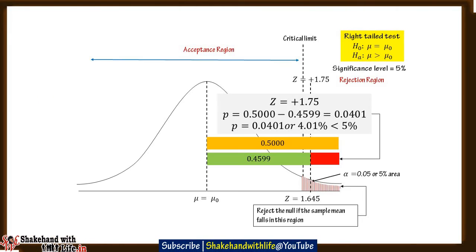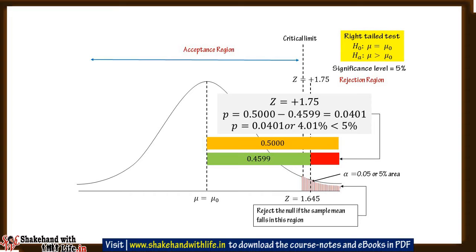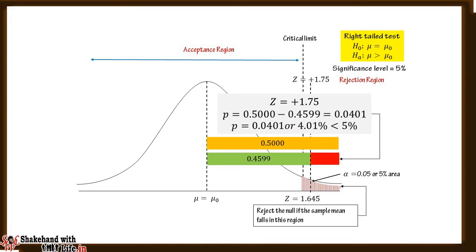In case of a right-tailed test, the p-value is the area to the right of the calculated value of the test statistic. Suppose the calculated value of Z comes out as +1.75; then the area to the right of it, using the table area under the standard normal distribution, is 0.5 − 0.4599 = 0.0401. Hence the p-value is 4.01%. At an alpha of 5%, the null hypothesis will be rejected because the p-value is less than 5%.